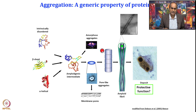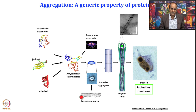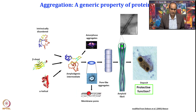It can be an amorphous aggregate or it can be an ordered aggregate like a pore-like aggregate. These pore-like aggregates, if they interact with a biological membrane, form pores in the membrane, and because of that they cause toxicity. The membrane is a very tightly regulated entry point for anything, and this pore actually punctures the membrane — that is how it becomes toxic.